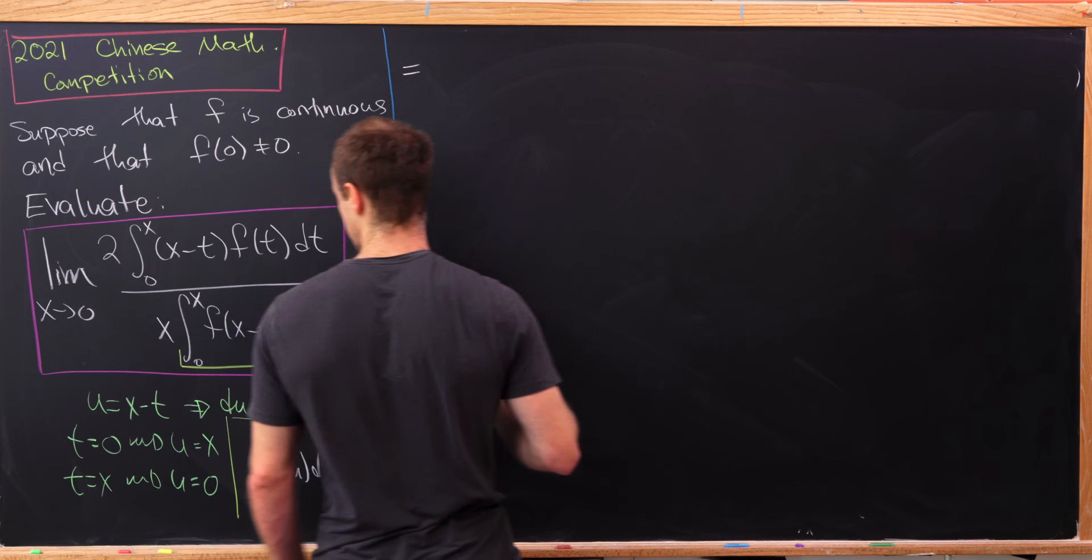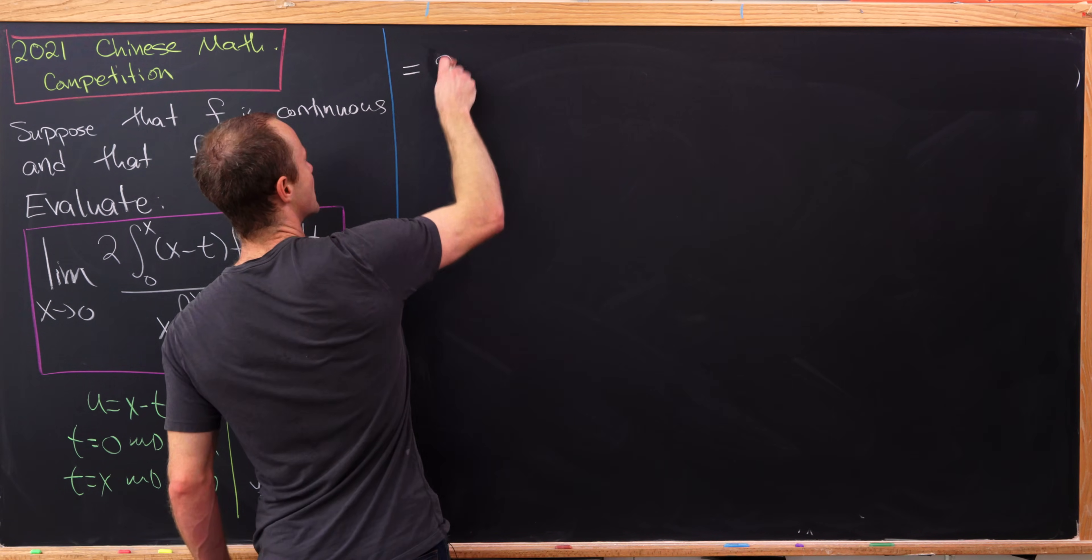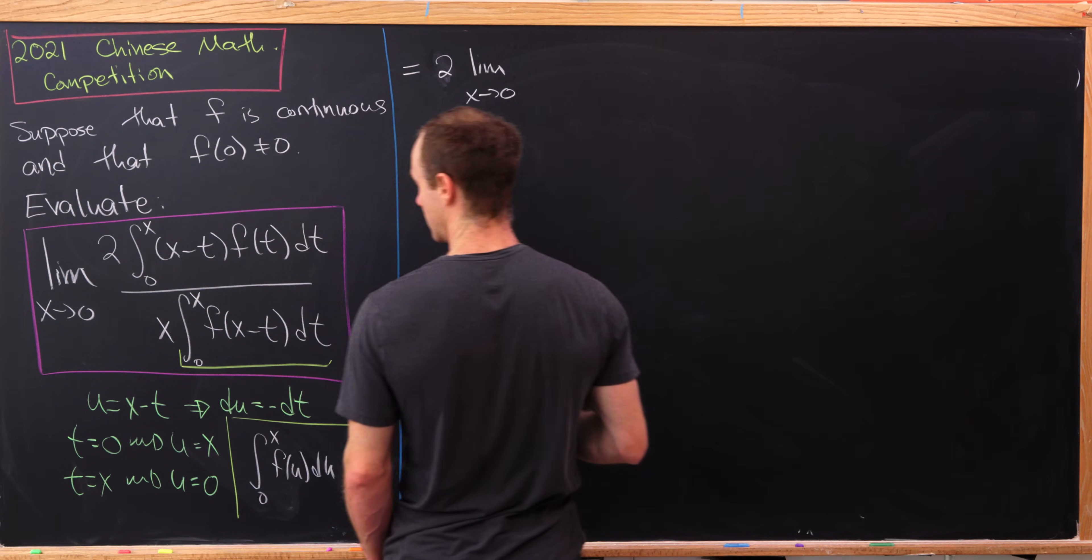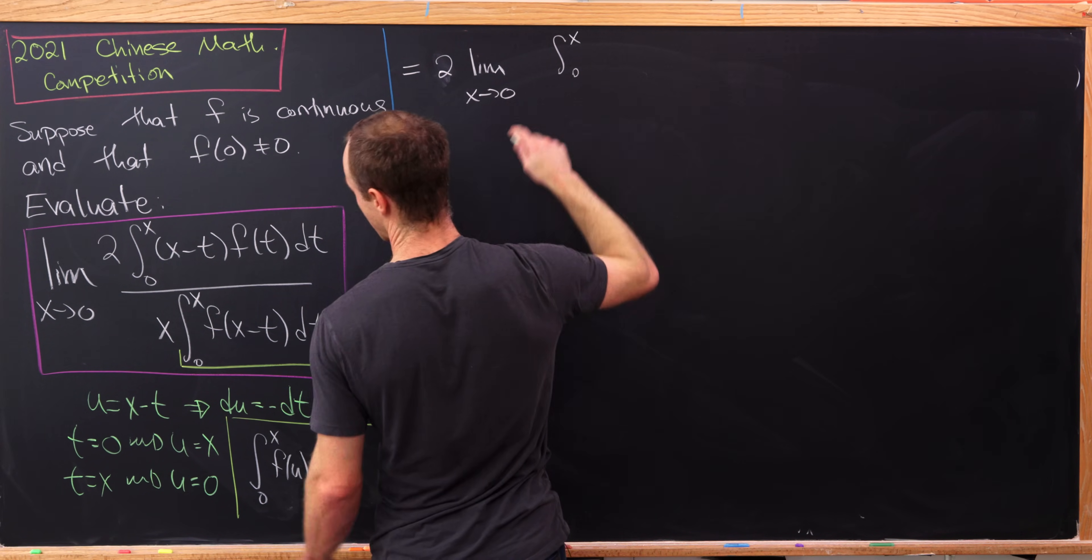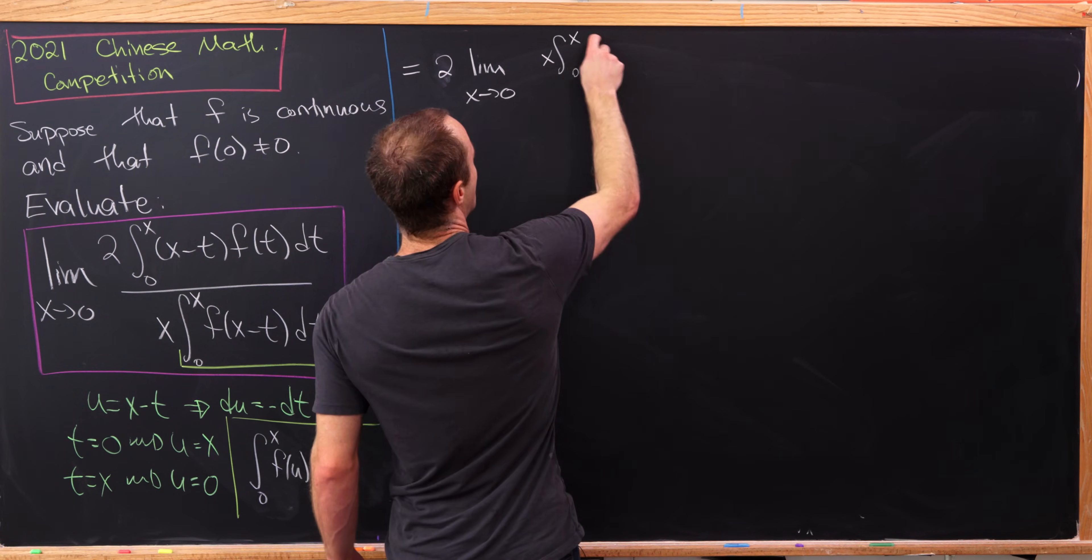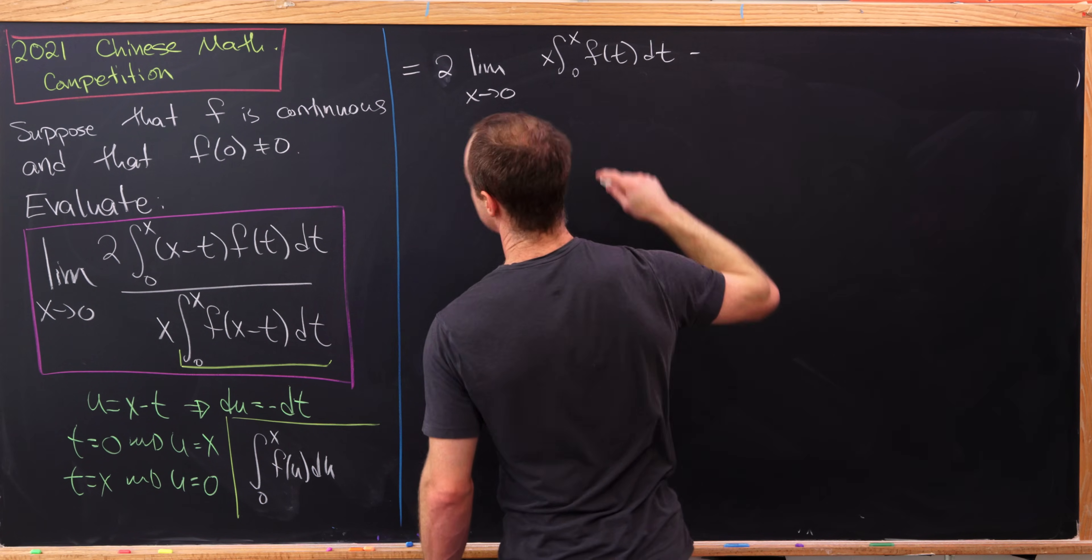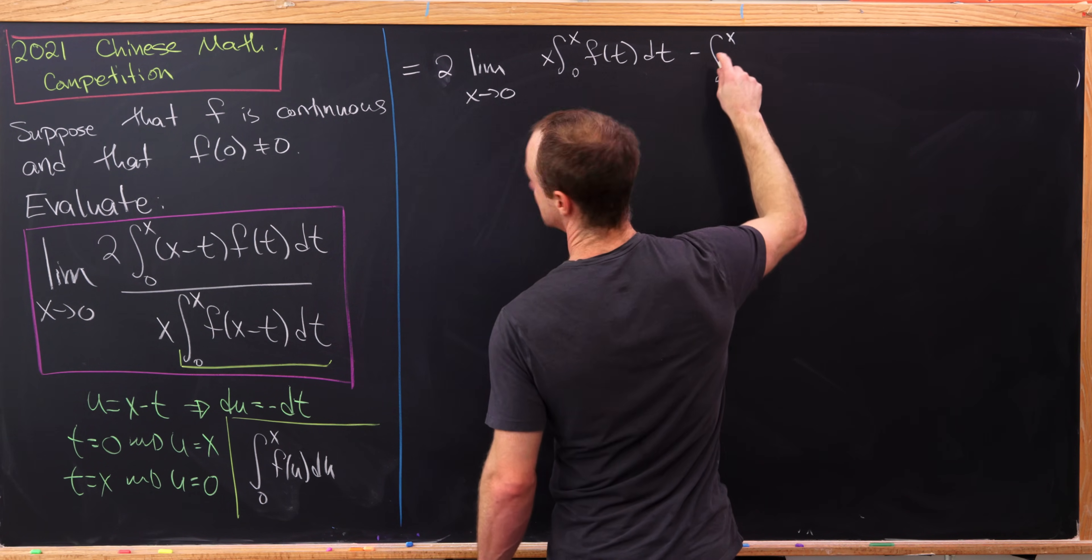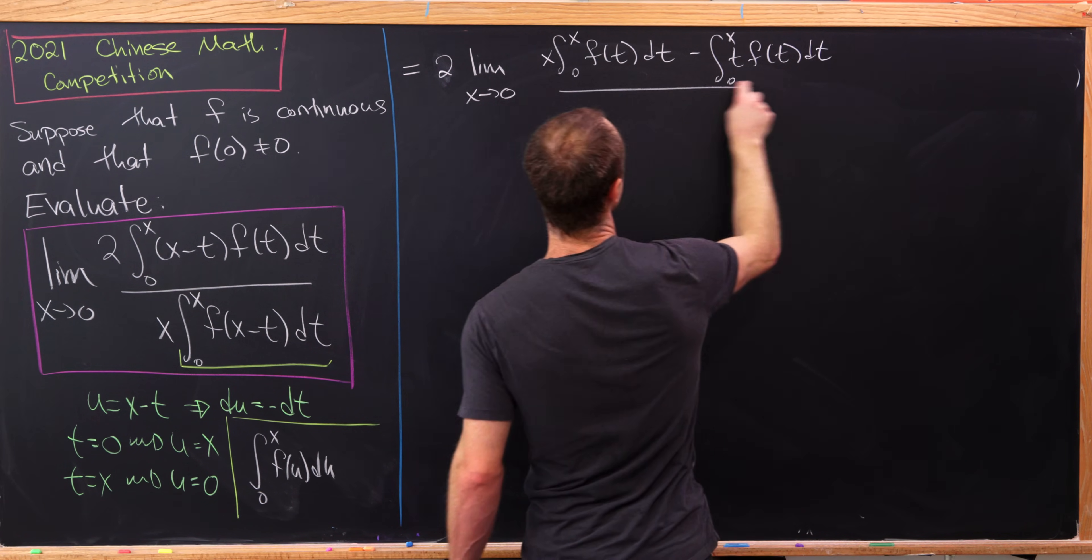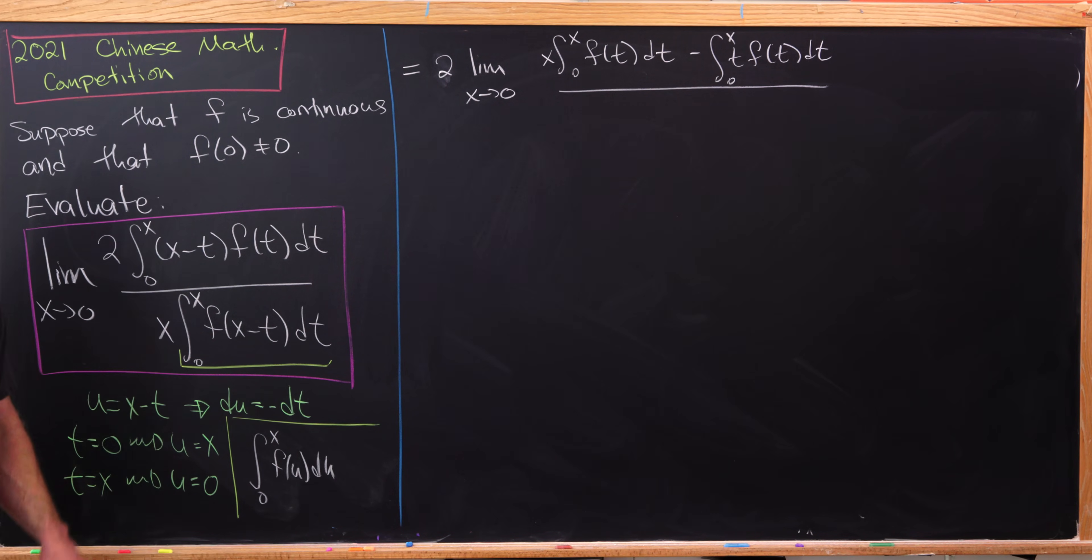Okay, so that means the limit in question can be rewritten as follows. So I'm going to bring the two out front and we'll have this limit as x goes to zero of the integral from zero to x of x times f of t dt. But I can take this x out and I'll simply have f of t dt minus the integral from zero to x of t times f of t dt. So I use the linearity of the integral in the numerator there. Using the fact that x is a variable with respect to the limit, but a constant with respect to the integral so we can factor it out.